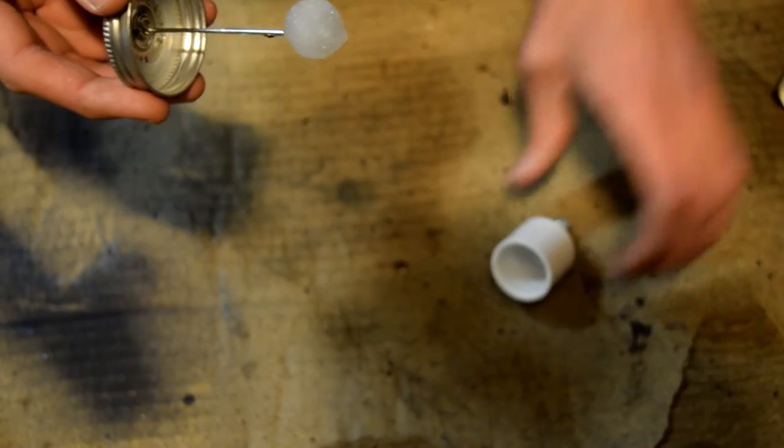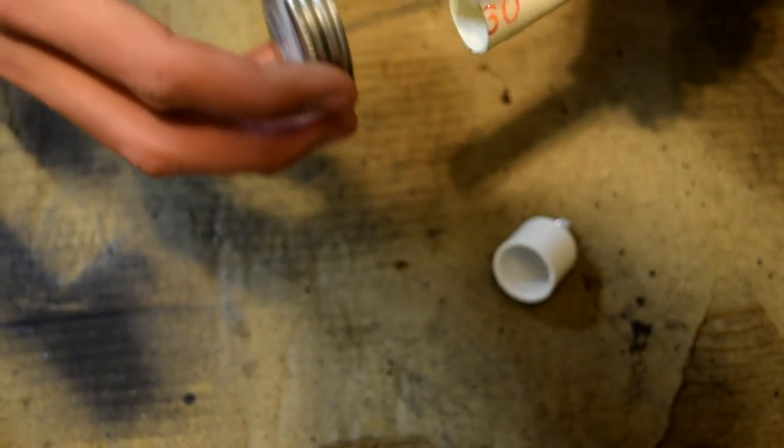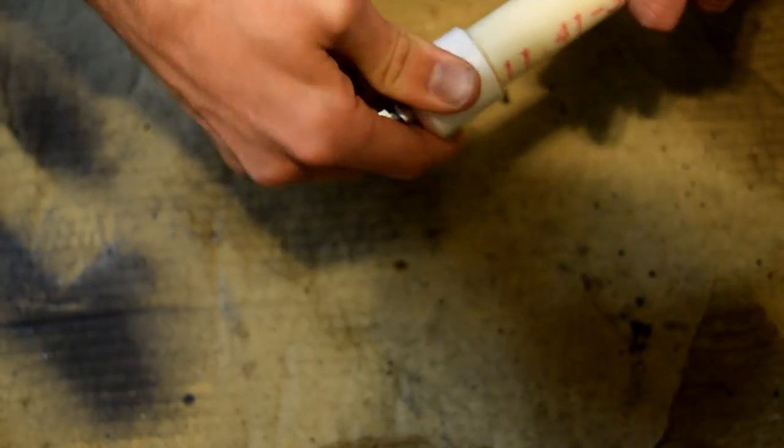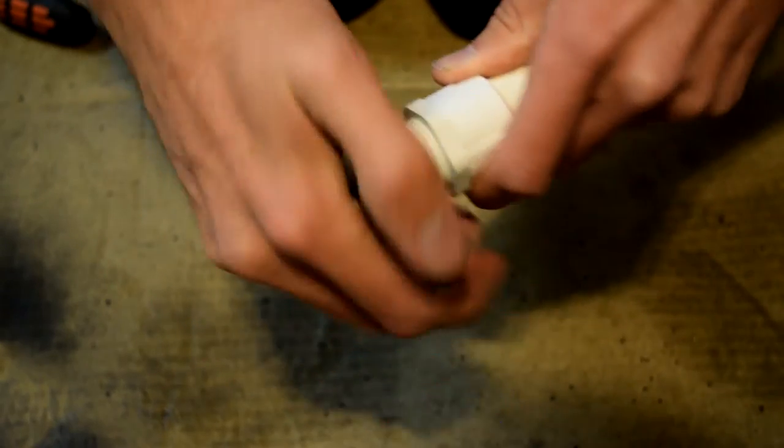Glue the cap with the bolt on it to the top of the 5 inch piece. Screw on the pipe flange.